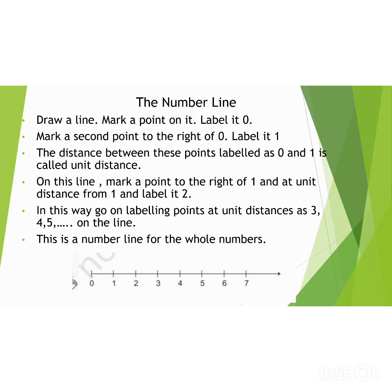Draw a line. Mark a point on it. Label it 0. Mark a second point to the right of 0 and label it 1. The distance between these points labeled as 0 and 1 is called unit distance. On this line, mark a point to the right of 1 and at unit distance from 1 and label it 2.